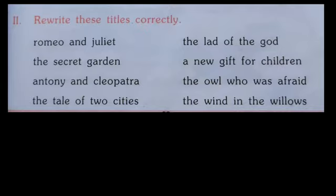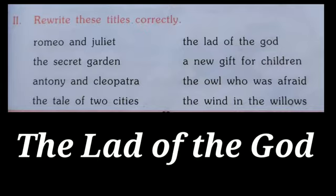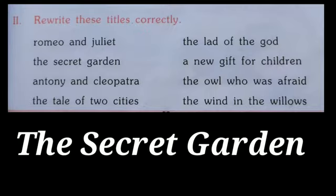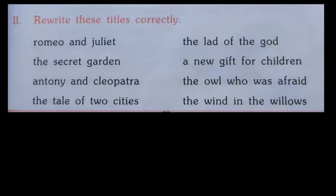Similar is the case with 'The Lat of the God', where the beginning letter T, L of Lat, and G of God are capitalized. The next one, 'The Secret Garden', is the name of a book, and here T of 'The', S of 'Secret', and G of 'Garden' are to be capitalized.